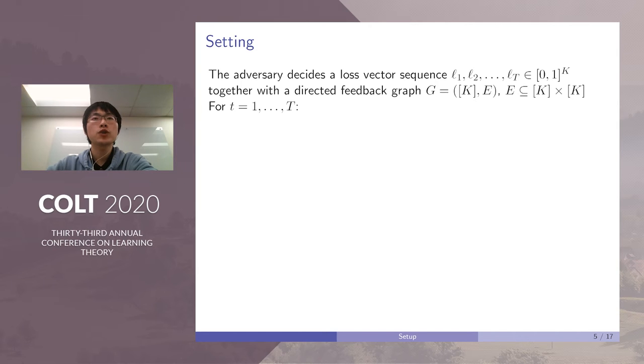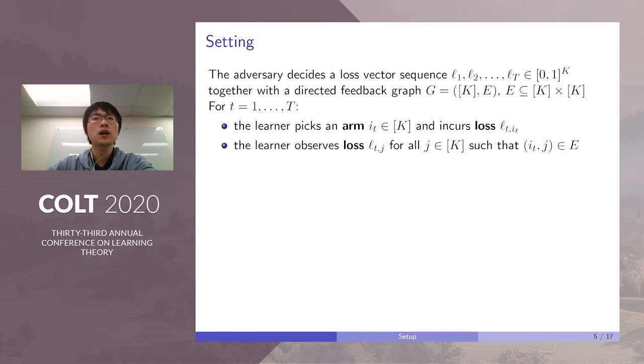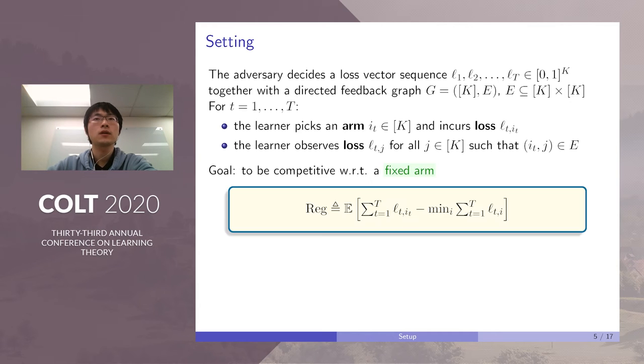Now, let's formally introduce the GMAB setting. At the beginning of the game, the adversary decides a loss vector sequence L_1 to L_T. All of them are k-dimensional vectors between 0 and 1. The adversary also decides a directed feedback graph G. At each round t, the learner first picks an arm i_t and incurs loss L_t(i_t). And then observes loss L_t(j) for all the j such that (i_t, j) is an edge in G.